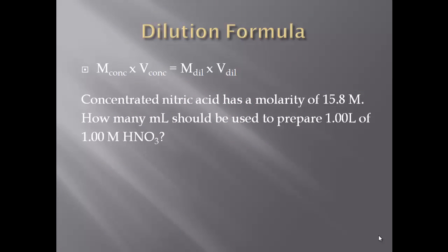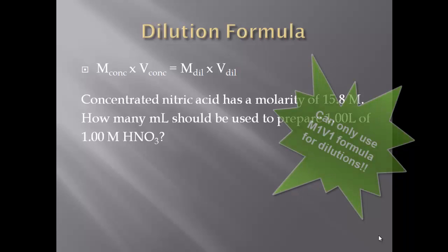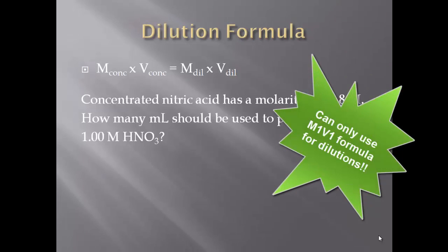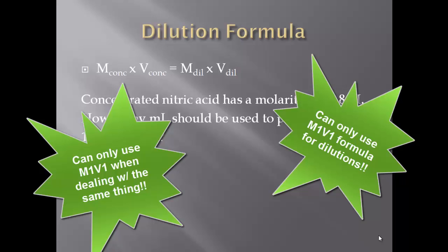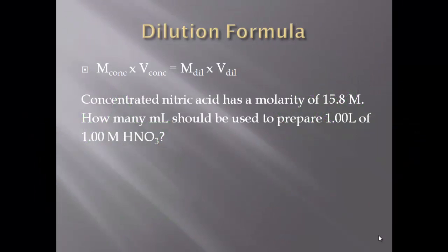The next thing we need to review is the dilution formula. If you've taken general chemistry 231 with me, you know that it is M1V1 equals M2V2. The only time you use this equation is if you're diluting a more concentrated solution to make a diluted solution, and only if you're dealing with the same component. You can never use a dilution formula if you have two different things in the problem. Dilute solutions can be prepared from concentrated solutions — a desired volume of the concentrated solution is transferred to a volumetric flask and then diluted to the intended volume with solvent.